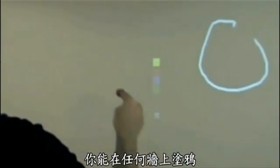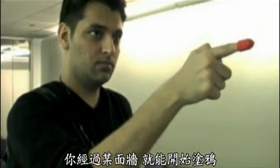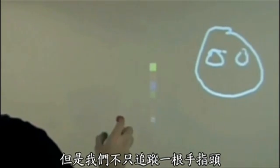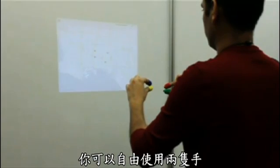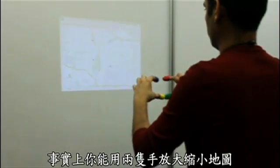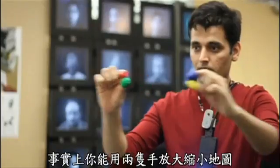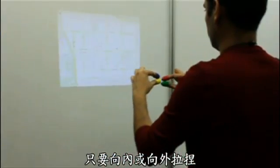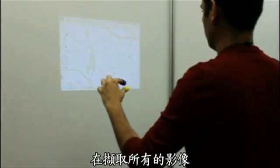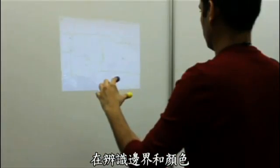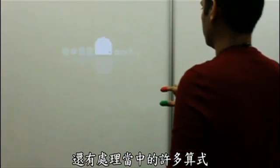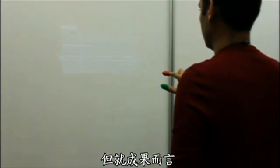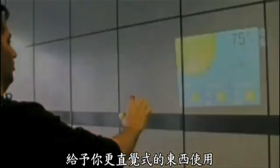There are color markers that in the beginning version we were using. You can start painting on any wall — you stop by a wall and start painting on it. But we are not only tracking one finger here; we're giving you the freedom of using both hands. So you can use both hands to zoom into or zoom out a map just by pinching. The camera gets all the images, does edge recognition and color recognition — many small algorithms are running inside. Technically it's a bit complex, but it gives you an output that is more intuitive to use.